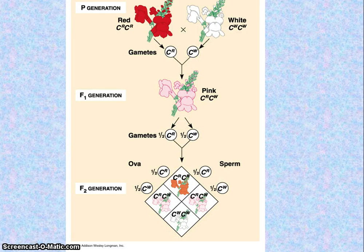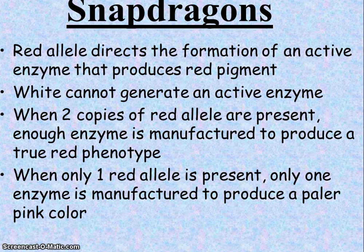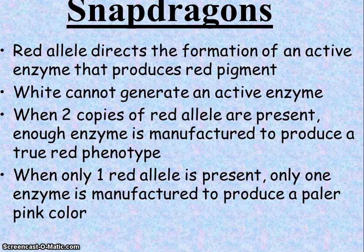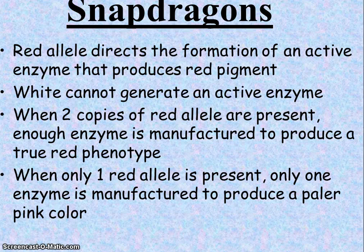Red crossed with white gives you pink. And this is just a fun fact about how this actually happens. The red allele directs the formation of an active enzyme that produces the red pigment. The white can't generate that active enzyme. So when there are two copies of the red, there's enough to produce red. But if there's only one allele present, then it's only going to be pink.